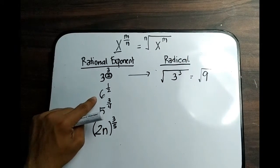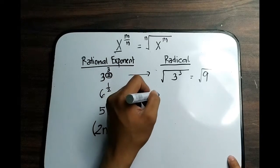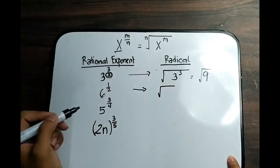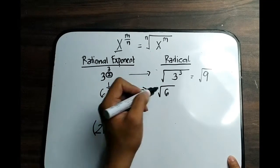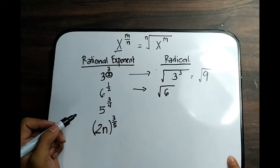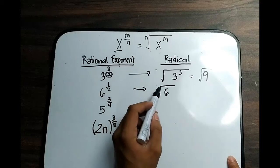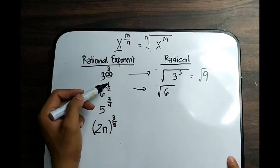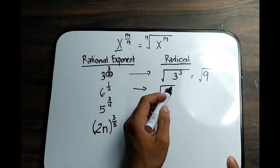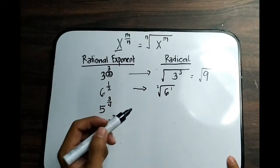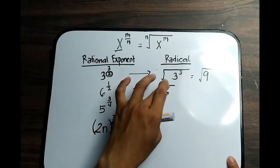For number 2, we have 6 raised to 1 half. Create your radical sign and put 6 inside as your radicand. Since the denominator is 2, the index is 2, making it a square root. The numerator of your exponent is 1, so we place 1 as the exponent, then make both the index 2 and exponent 1 invisible. The result is the square root of 6.